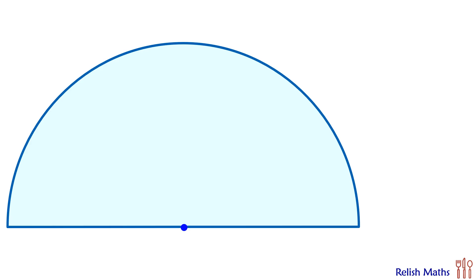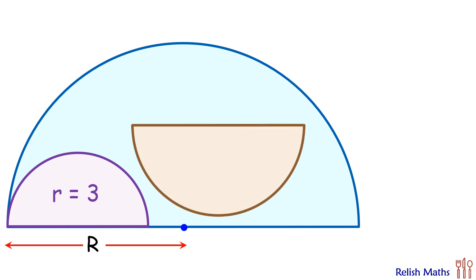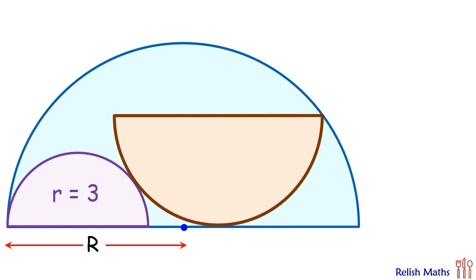Today's question: we have a semicircle with radius R. Inside it we are drawing one more semicircle with radius 3 cm and a third semicircle which will be inverted and whose diameter is parallel to the diameter of blue circle.